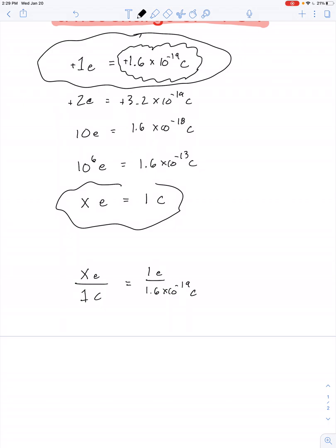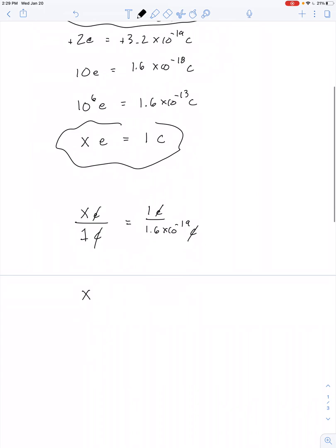So we can cancel out electrons on both sides of the equation. We can cancel out coulombs. And we're basically left with the answer to our question. The number of electrons as represented by x is nothing more than the inverse of 1.6 times 10 to the negative 19th.